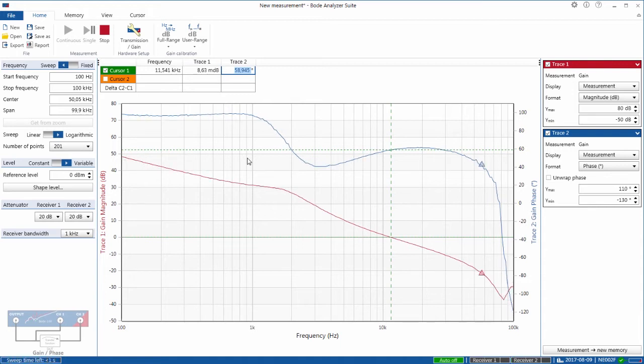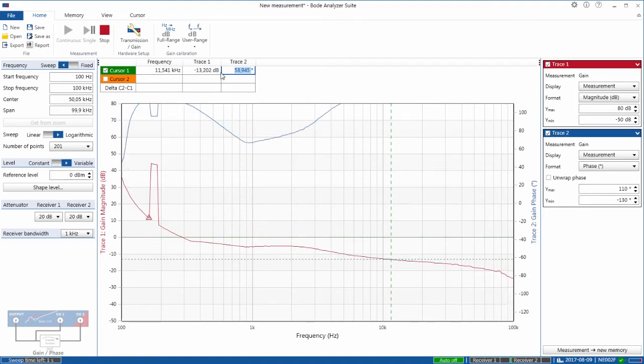Now if I just go into discontinuous conduction mode you'll see immediately that the crossover drops. I need to reduce my injection level.